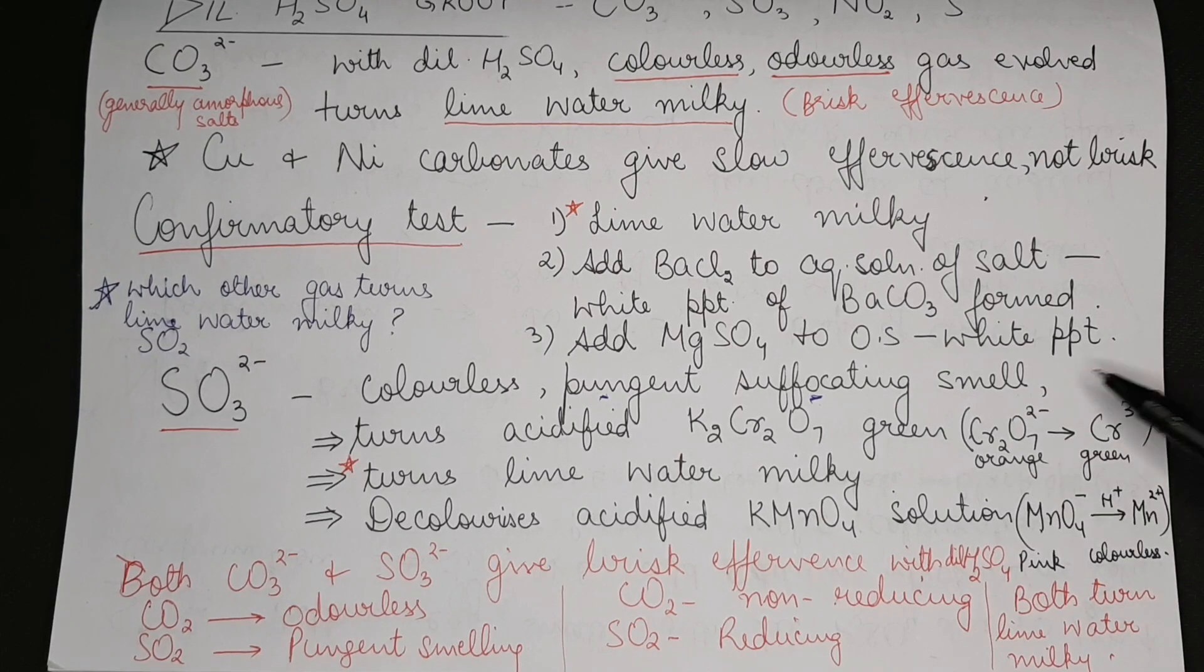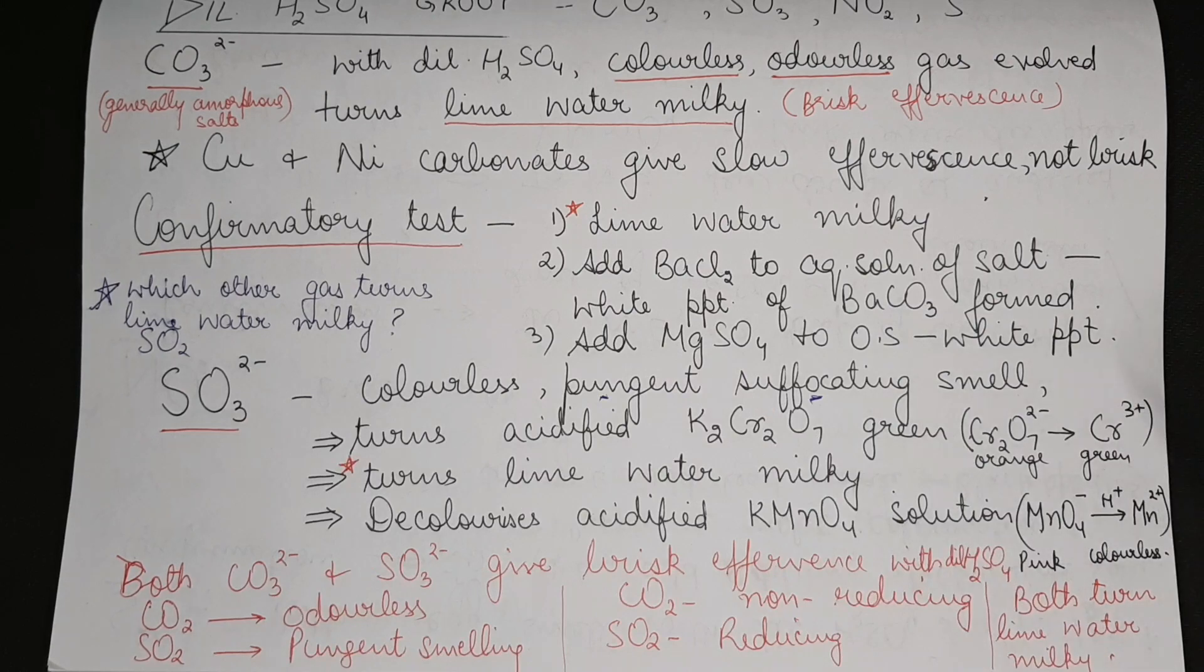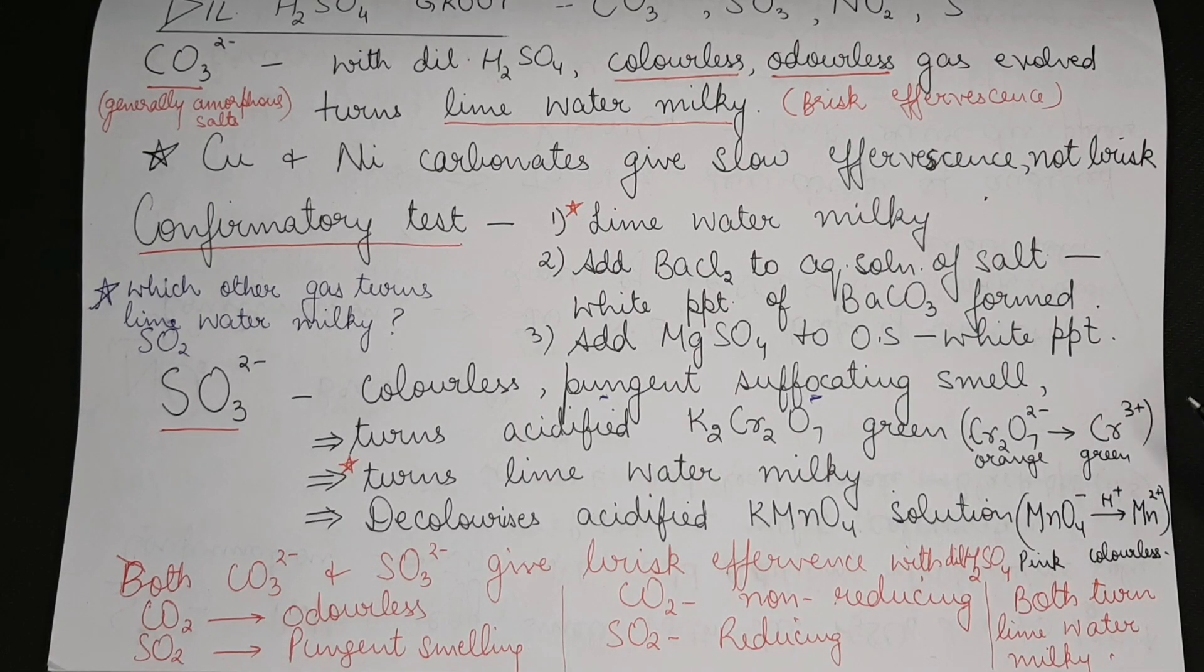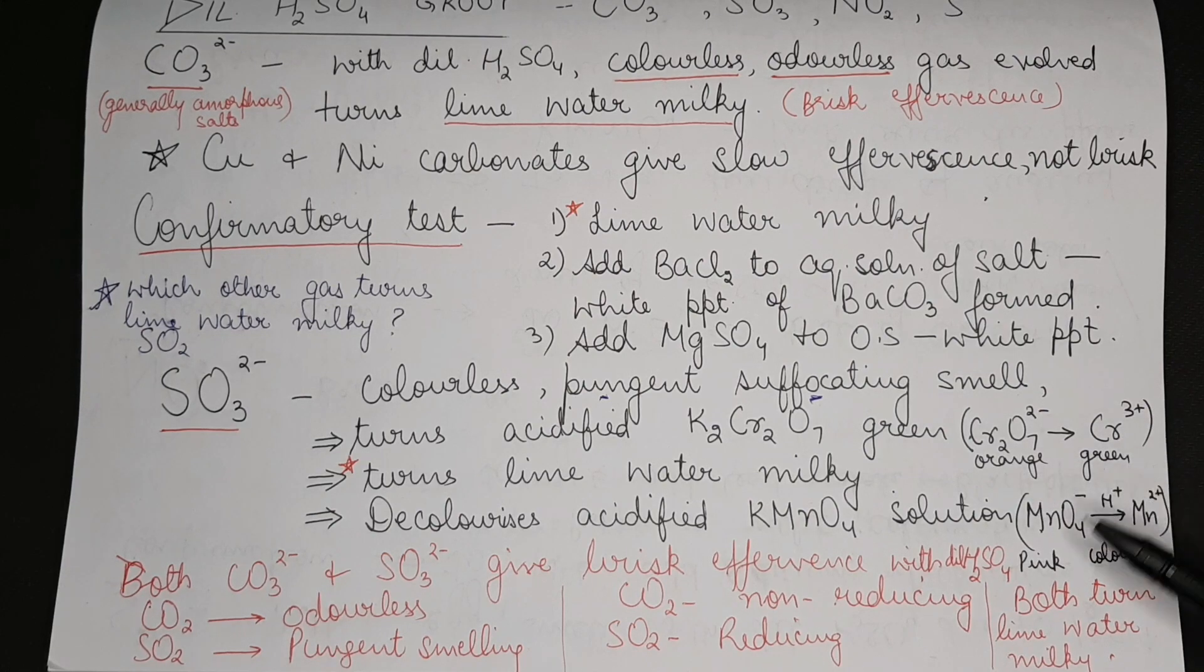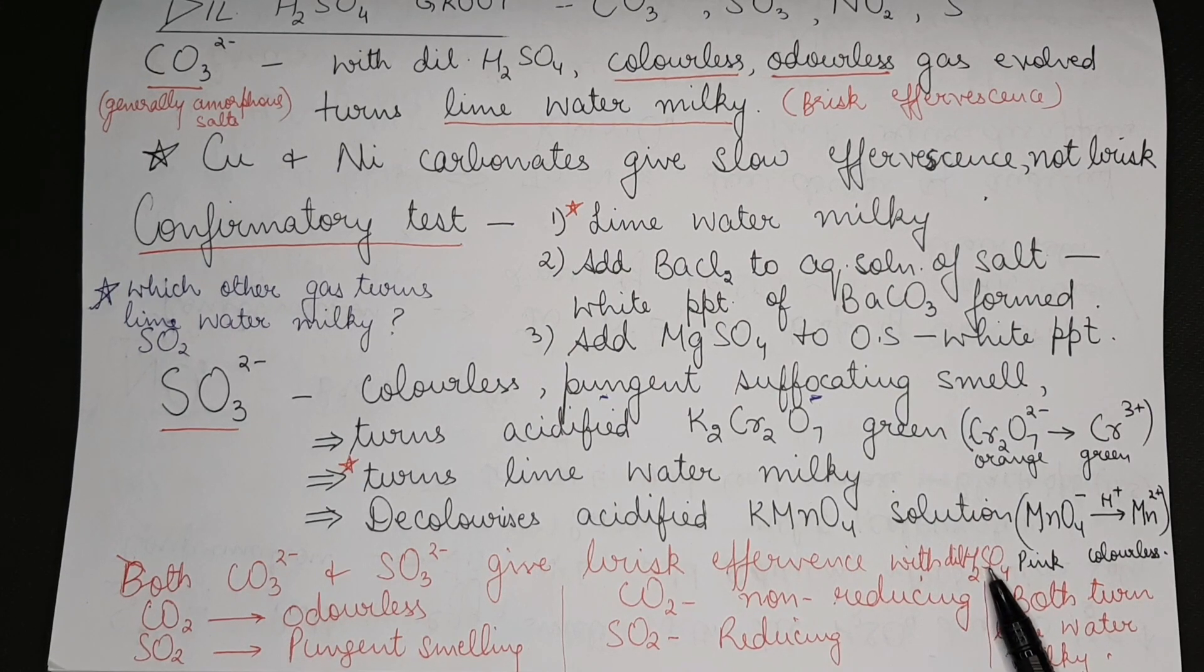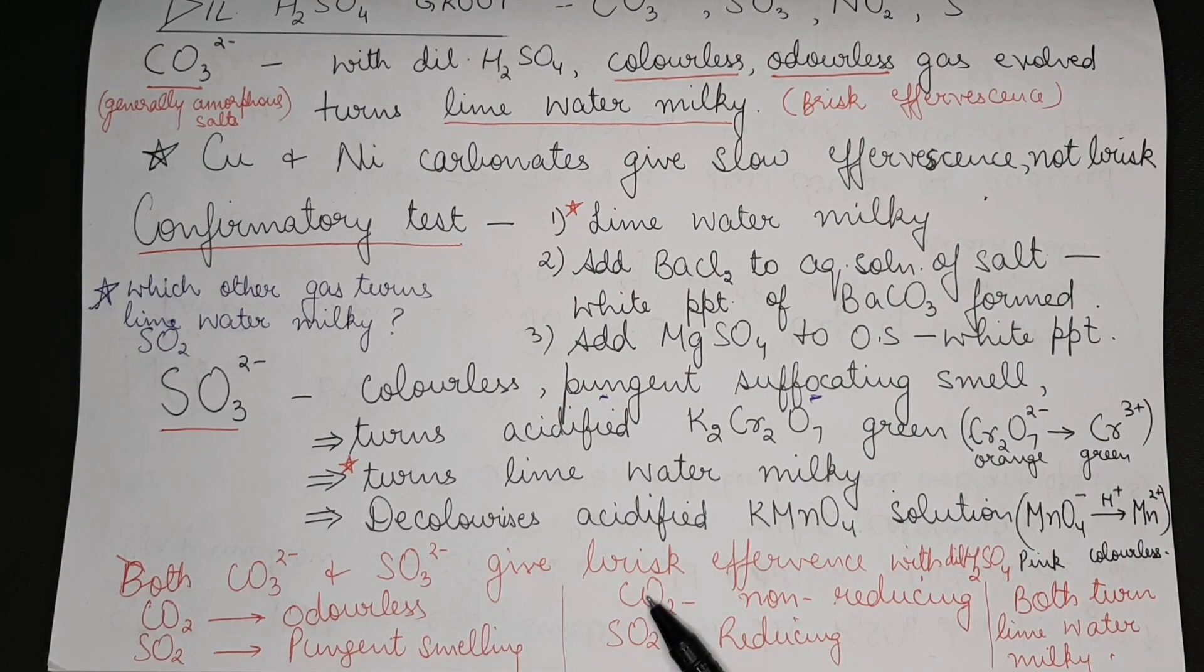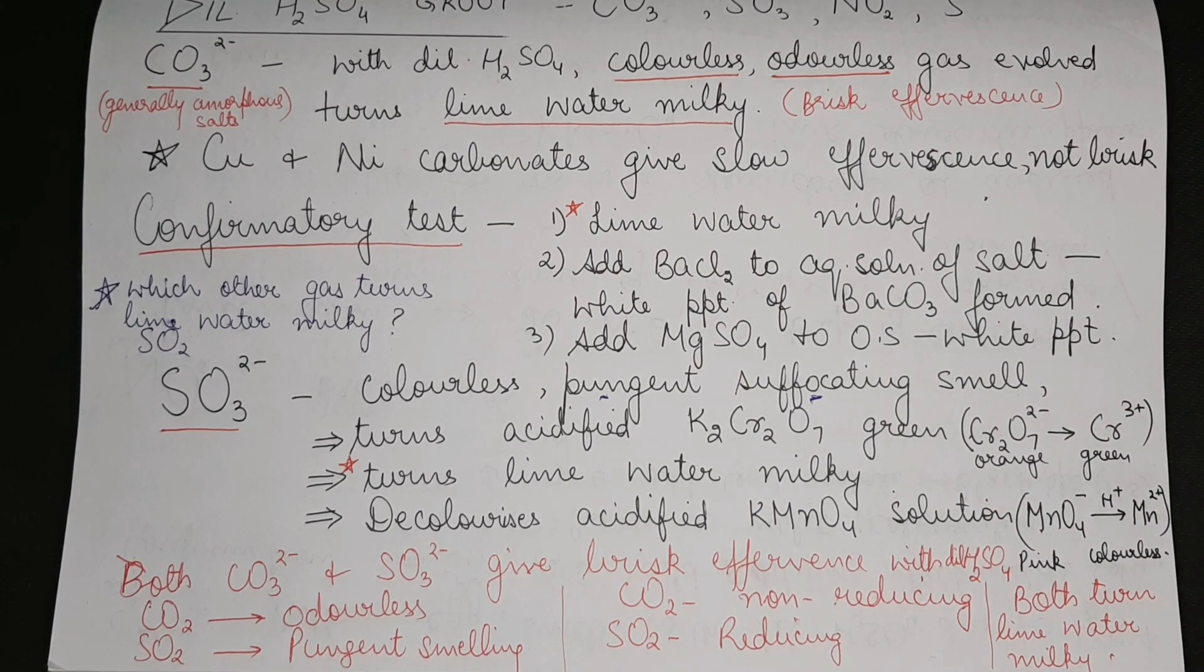Sulfur dioxide gas here is going to get oxidized to sulfate by this oxidizing agent which itself undergoes reduction. Please remember this is very important for your entrance exams as well. Both carbonate and sulfite give brisk effervescence with dilute sulfuric acid. The difference: carbon dioxide is odorless gas, sulfur dioxide is a pungent smelling gas, but both are colorless gases. Carbon dioxide is non-reducing whereas sulfur dioxide is reducing, and both turn lime water milky. These are all important points and can be asked as viva questions.